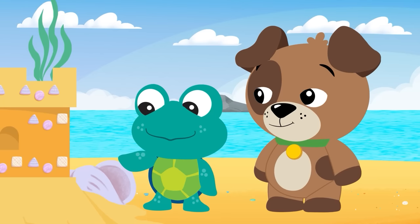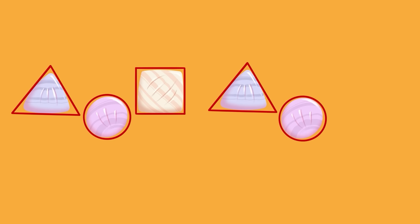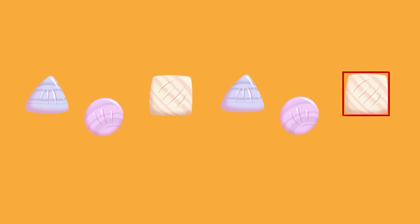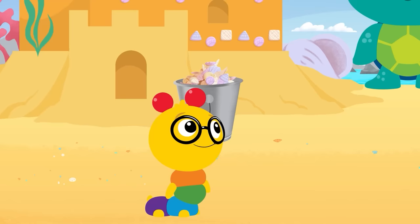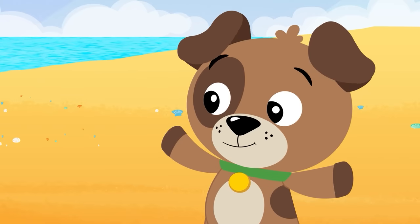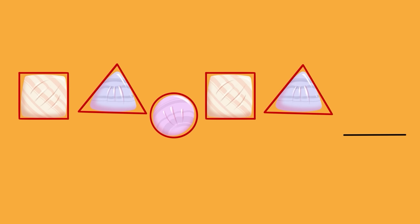Sure! Here we go! Triangle, circle, square, triangle, circle — what do you think comes next? Square! Great job seeing the pattern, Dean! One more! Triangle, circle, square, triangle — circle!